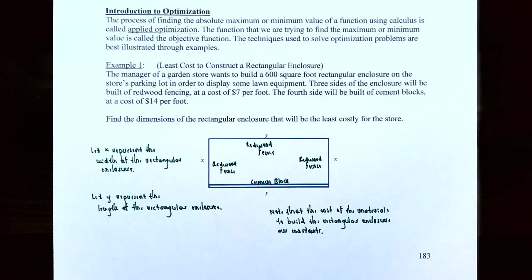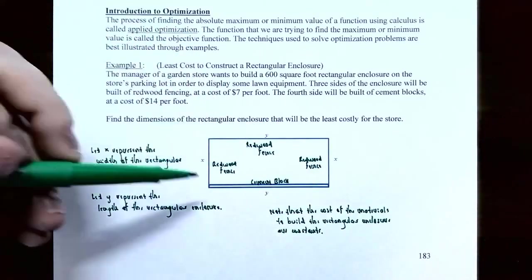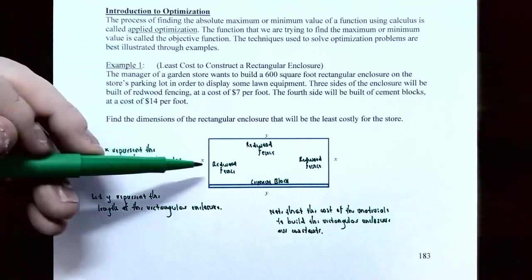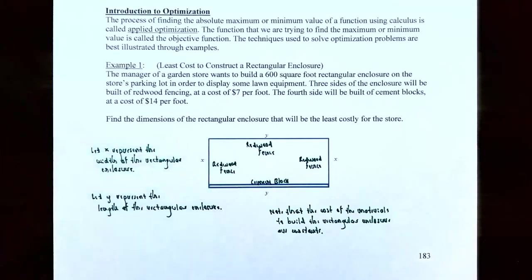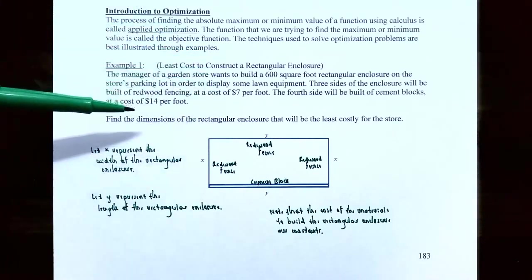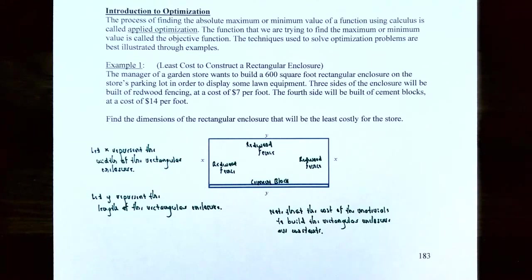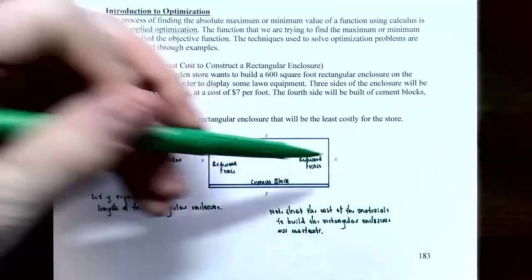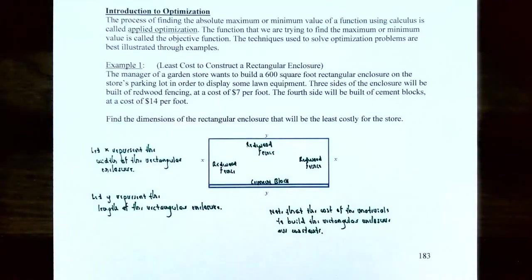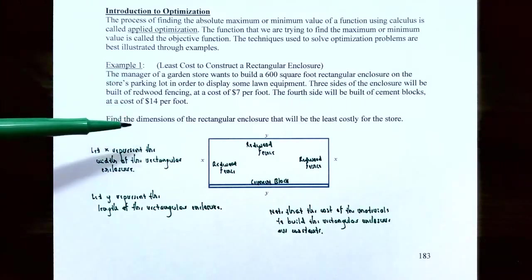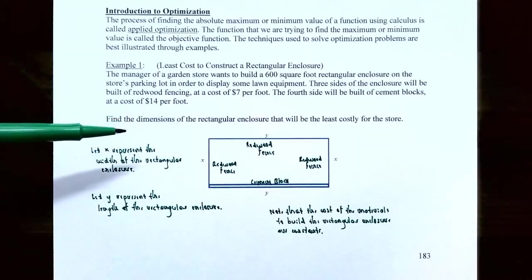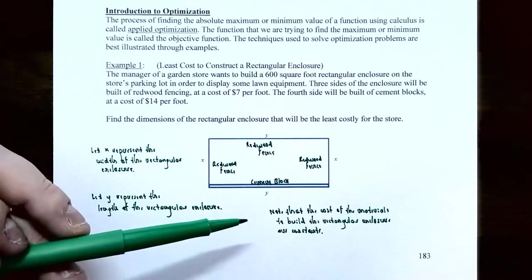Since we're dealing with a rectangular enclosure, let's draw a rectangle. Three sides are going to be formed using redwood fencing, but the last side is going to be constructed using cement blocks. The redwood fencing costs $7 per foot and the cement blocks cost $14 per foot. Let x be the width of the rectangular enclosure — those are two sides — and y will be the length — those are the other two sides.